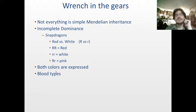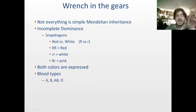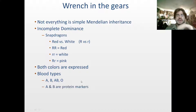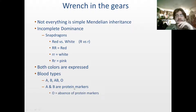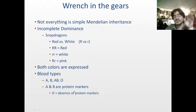Blood types is another good example of incomplete dominance. You can have A, B, AB, or O blood types. A and B are protein markers that are governed by Mendelian inheritance. O is the absence of protein markers.